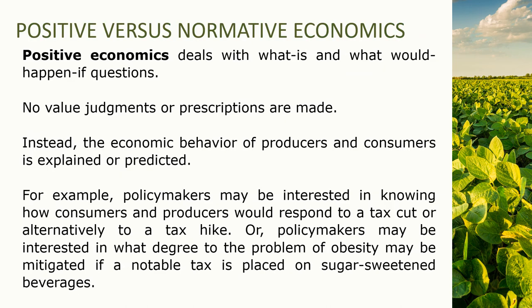Since we have discussed the two branches of economics, we need to know the approaches used in answering problems in economics. Number one, we have positive economics, and number two, normative economics. Positive economics deals with 'what is' and 'what would happen if' — it is very objective, meaning no value judgments or prescriptions are made; instead, the economic behavior of producers and consumers is explained. For example, policymakers may be interested in knowing how consumers and producers would respond to a tax cut or tax hike, or to what degree obesity may be mitigated if a notable tax is placed on sugars within beverages.